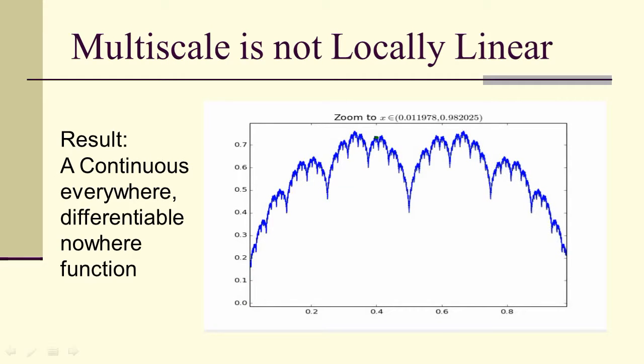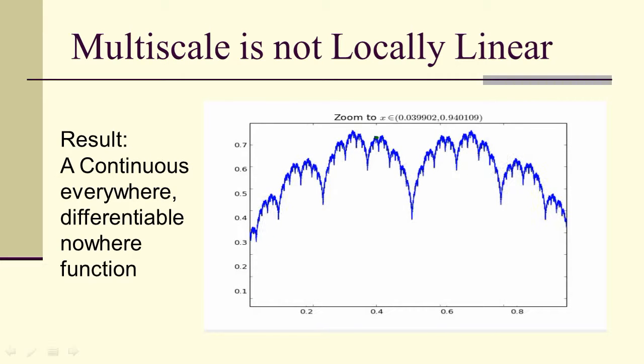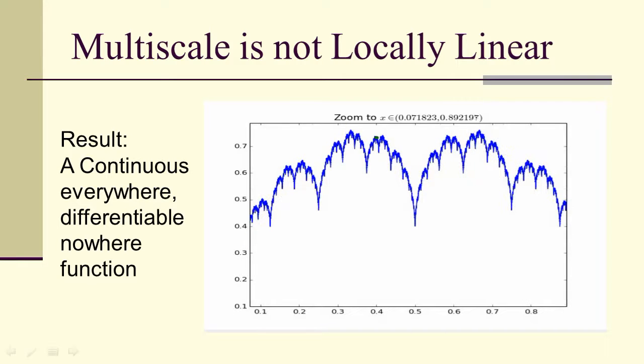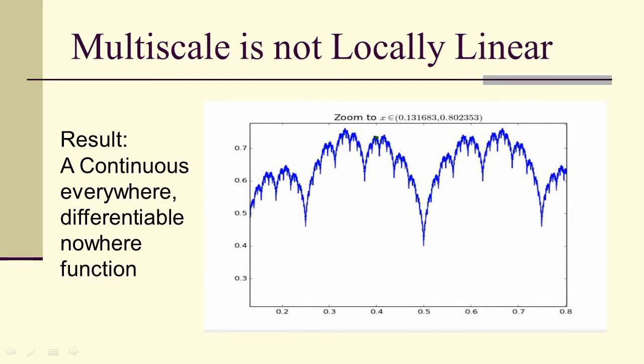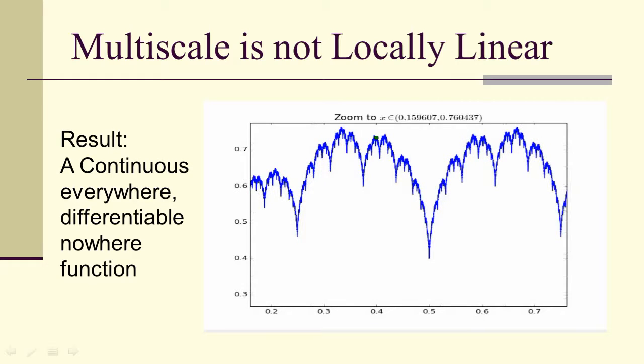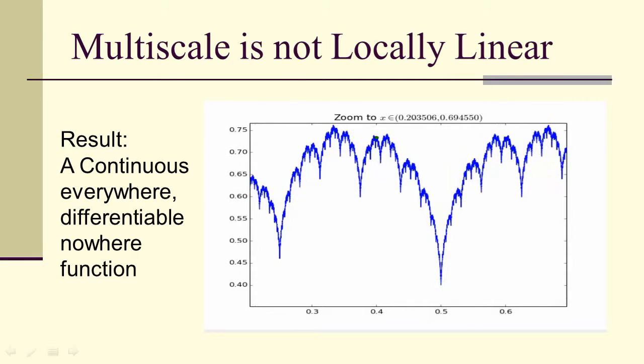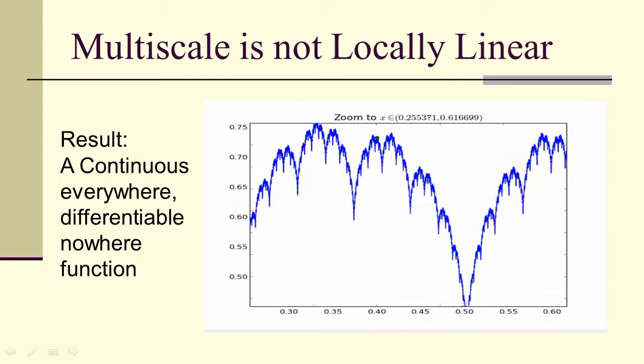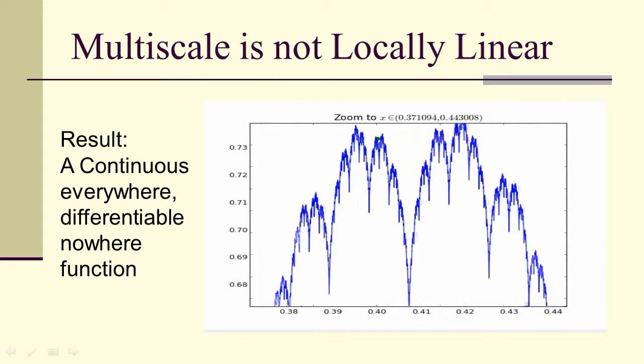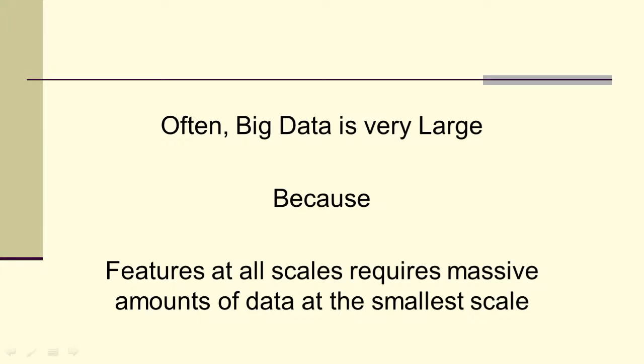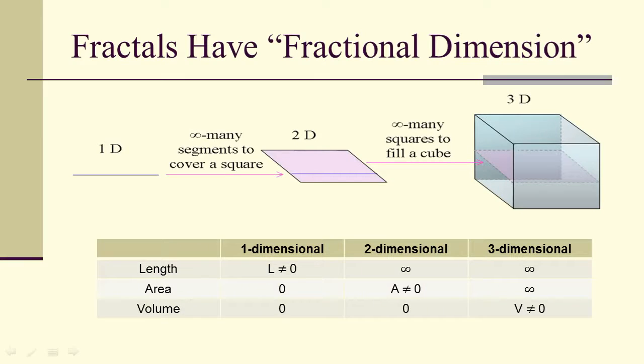The result is continuous everywhere and differentiable nowhere. The proof of continuity is actually pretty straightforward because all those line segments were connected. The proof of differentiability nowhere is because, as you zoom in, you keep seeing the use of linear segments being replaced by cusps, which are not differentiable. Data can be very large because we need features at all scales, and that's usually the reason we need massive amounts of data at the smallest scale.